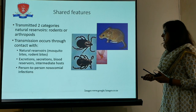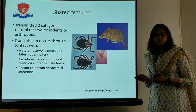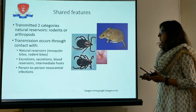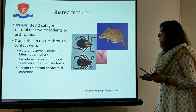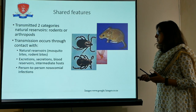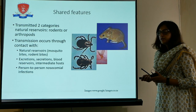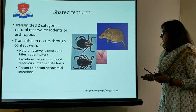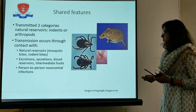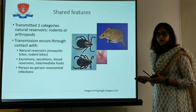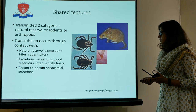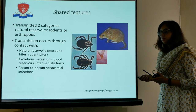What are the common features we can see in all these viral hemorrhagic fevers? One is the transmission. They are transmitted by rodents or arthropods. They can be transmitted through contact with natural reservoirs' excretions, secretions, and blood, or through intermediate hosts, and they can obviously be transferred from person to person.